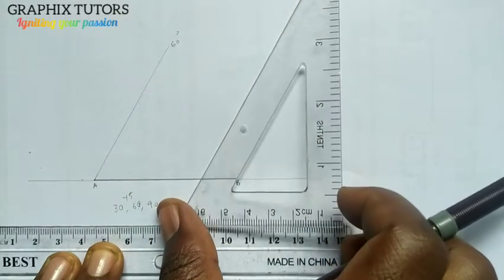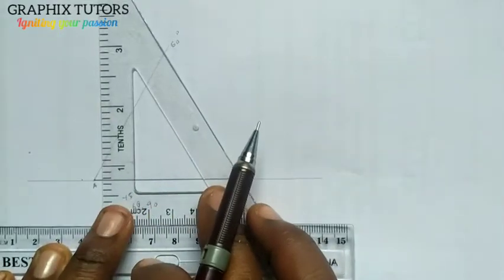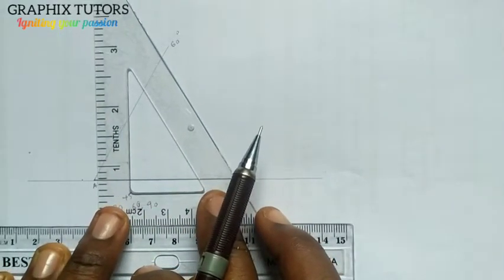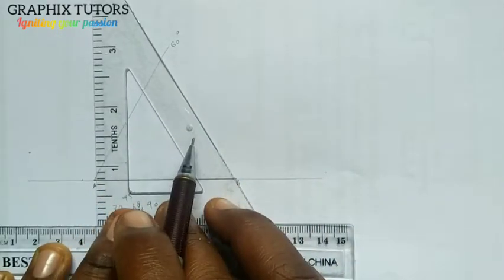Now the next angle that 67 and a half falls in is 90. So I'm going to put the 90 this way. So basically this will be my angle 90 degrees.